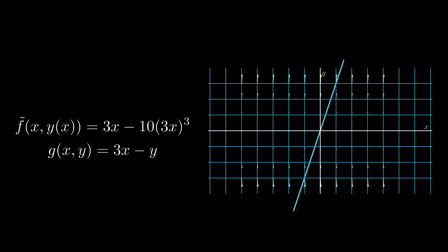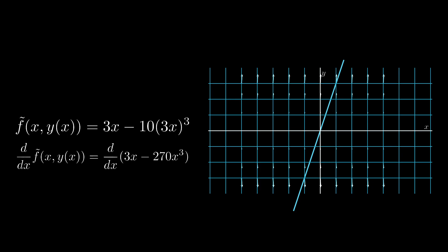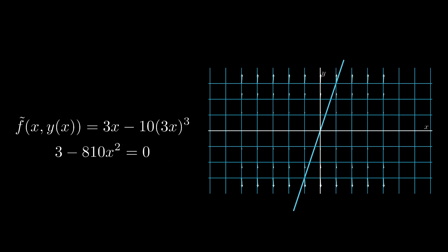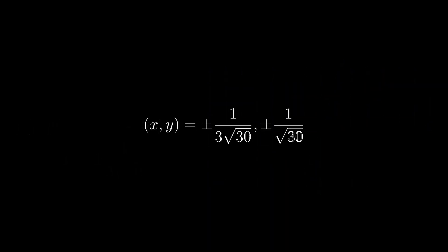We can then use the derivative method to find the stationary points of f-tilde. Here I've chosen to substitute y out in favor of x inside f-tilde, so now we have a function f-tilde which is only a function of x that agrees with f of x,y whenever the constraint is satisfied. After taking the derivative of f-tilde and setting it equal to zero and doing some algebra, we find that x has to be plus or minus 1 over 3 root 30. Plugging back into the constraint gives us y equals plus or minus 1 over root 30.